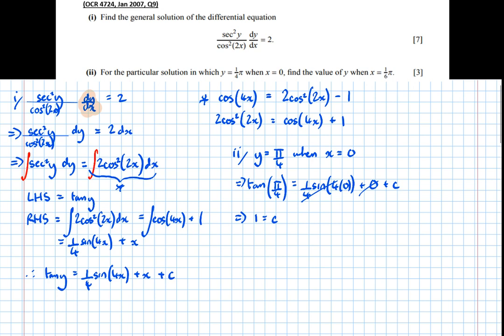Okay, so I'm just going to make this clearer by putting a dividing line down here so the working doesn't get muddled. So now I have that tan of y equals a quarter sine of 4x plus x plus the c, which was 1.